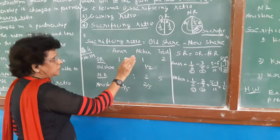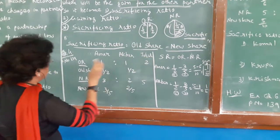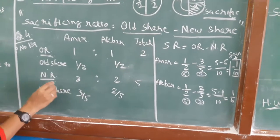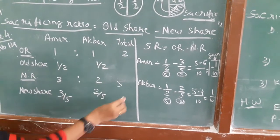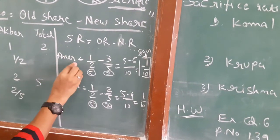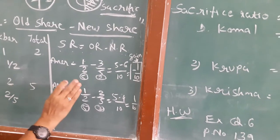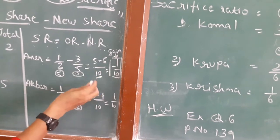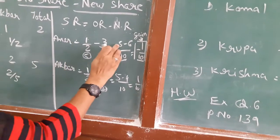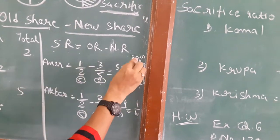Let us work this out. List the names of the partners. Old share of Omar is 1/2 and new share is 3/5; old share of Akbar is 1/2 and new share is 2/5. Applying the sacrifice ratio formula — old share minus new share — for Omar: 1/2 minus 3/5. Finding the LCM of 2 and 5 gives 10, so it becomes 5/10 minus 6/10 equals minus 1/10. The answer is minus 1/10, which means Omar is gaining.